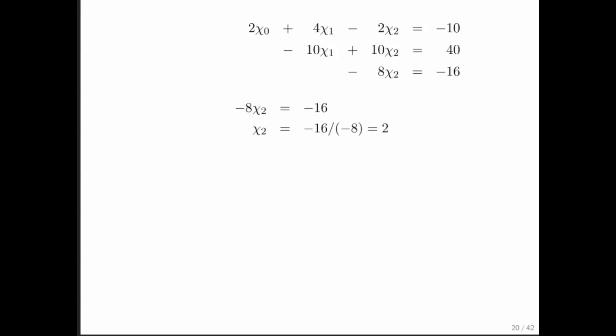Once we know that, we can focus on the second equation. We now know what chi2 is. It's equal to 2. So we can fill that in. We end up with one equation in one unknown, and we can solve that by doing some simple algebra.